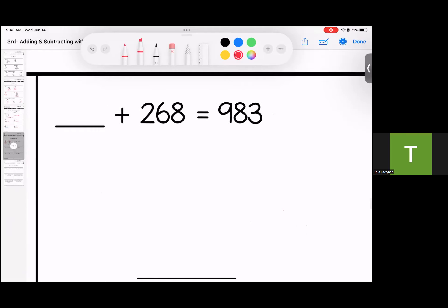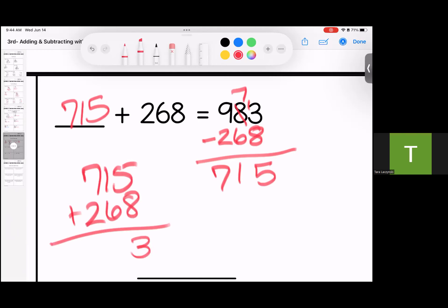For these, I can use my opposite operation. I can subtract to see what's missing. So 7 and 13. 13 minus 8 is going to give me 5, 7 minus 6 is 1, 9 minus 2 is 7. So if I check this, 715 plus 268, it matches. This is my missing number.